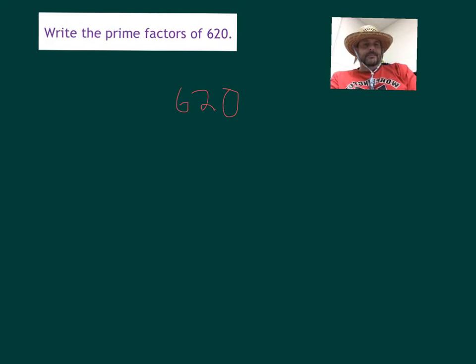Well, we need to start breaking it down, and I see it ends in a zero, so I know that 62 times 10 is gonna get me 620. I'm not done here. Neither one of those numbers are prime.